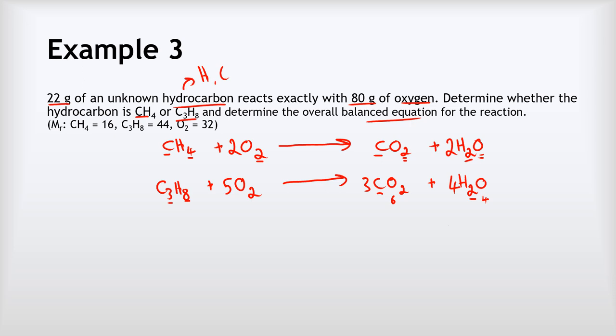The key question comes down to the ratio of our hydrocarbon to oxygen. If it is in a one to two ratio, the first equation (methane) is correct; if it is in a one to five ratio, equation two (propane) is correct. Let's calculate those mole ratios.